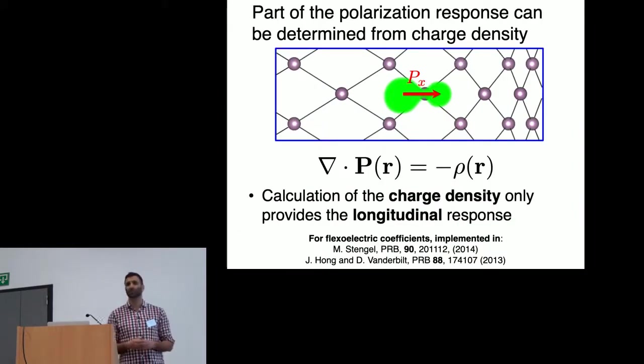The reason that these previous calculations required these tricks with supercell or slab cells is the following. So if you think about the response to a gradient, one immediate way to think about it is to look at how the charge density in the crystal changes. The charge density in bulk only contains information about the longitudinal component of the polarization field. Therefore, if we do a bulk calculation and we calculate the first order charge, we only have access to the longitudinal flexoelectric coefficients.